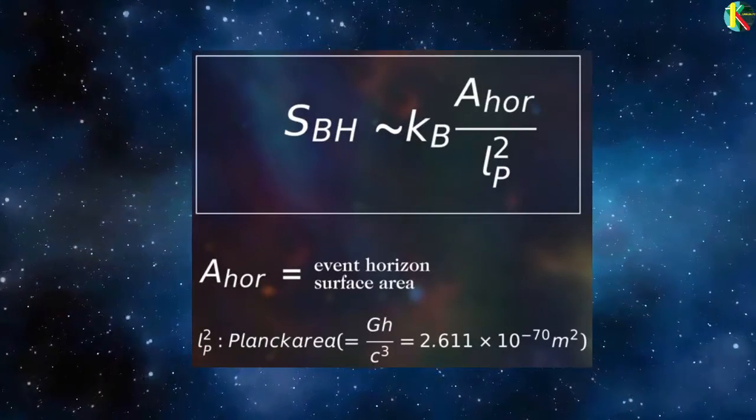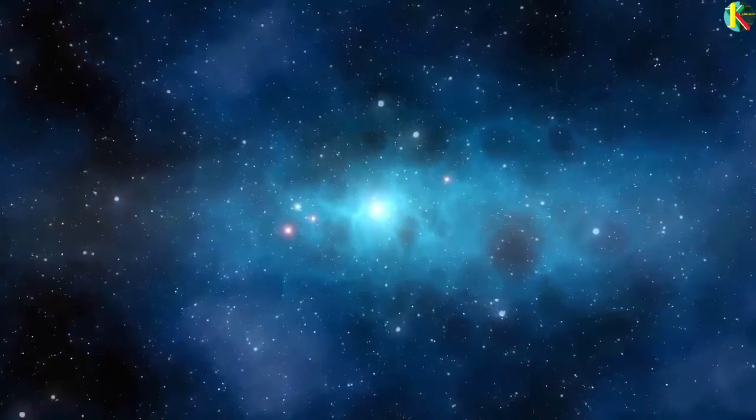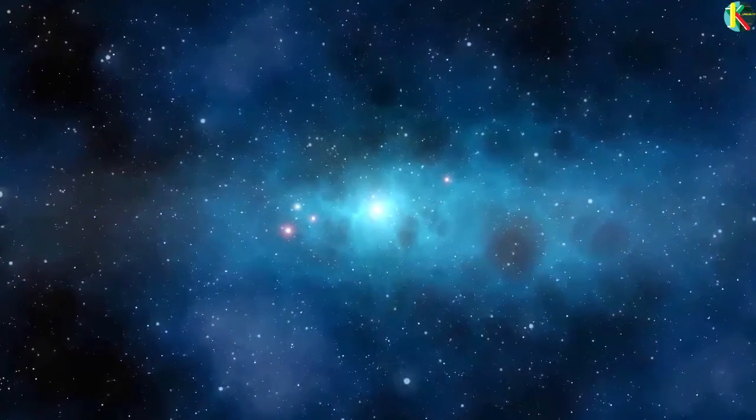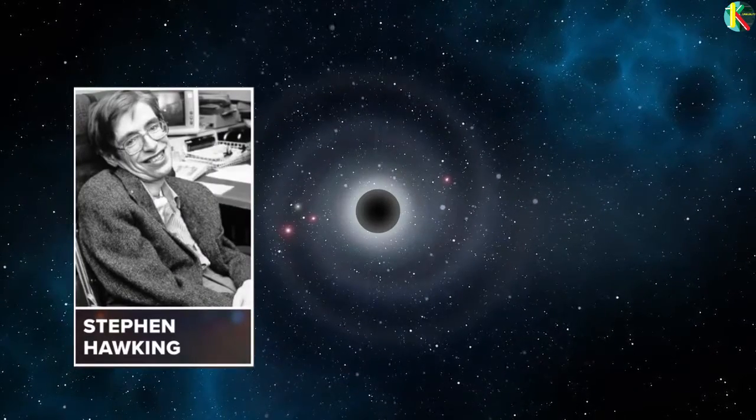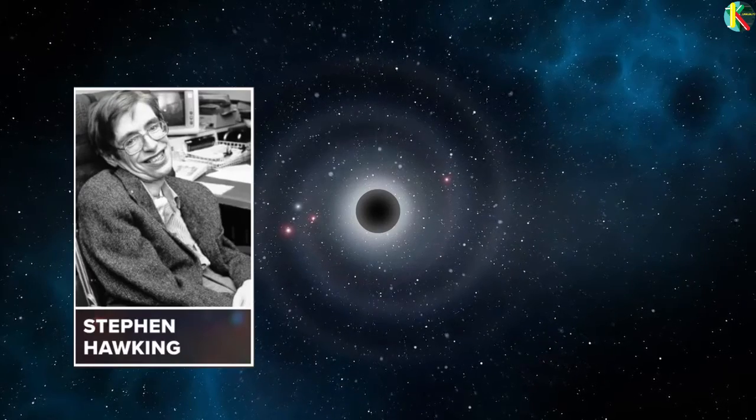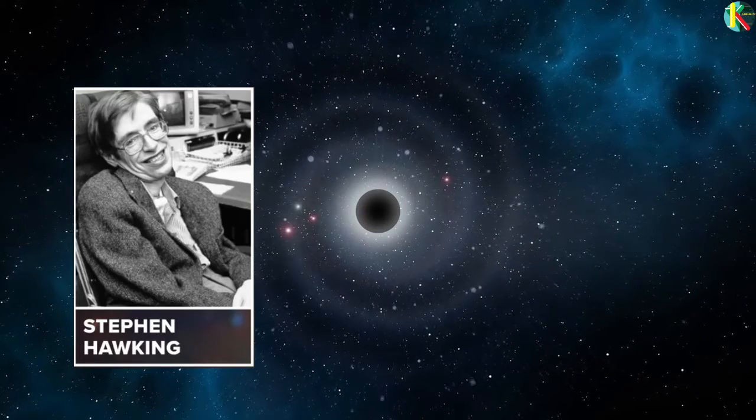Bekenstein's connection between surface area and entropy could have been a coincidence at least until Stephen Hawking came along. In 1974, a year after Bekenstein's first paper on black hole thermodynamics, Hawking published his first Hawking radiation paper.